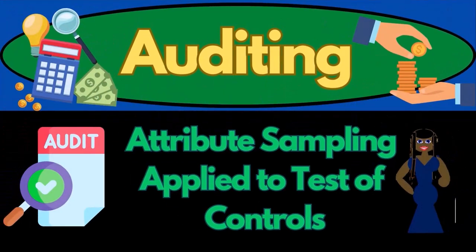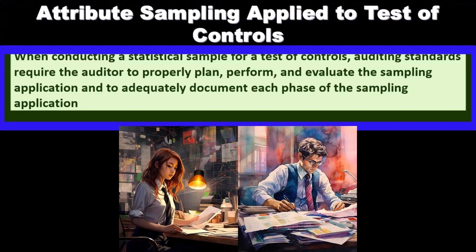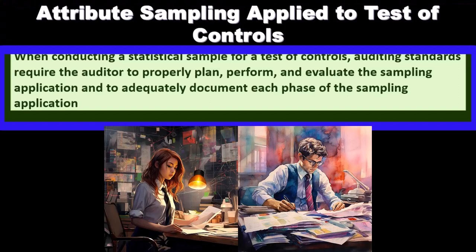In this presentation, we will take a look at attribute sampling applied to a test of controls. When conducting a statistical sample for a test of controls, auditing standards require the auditor to properly plan, perform, and evaluate sampling application and to adequately document each phase of the sampling application.